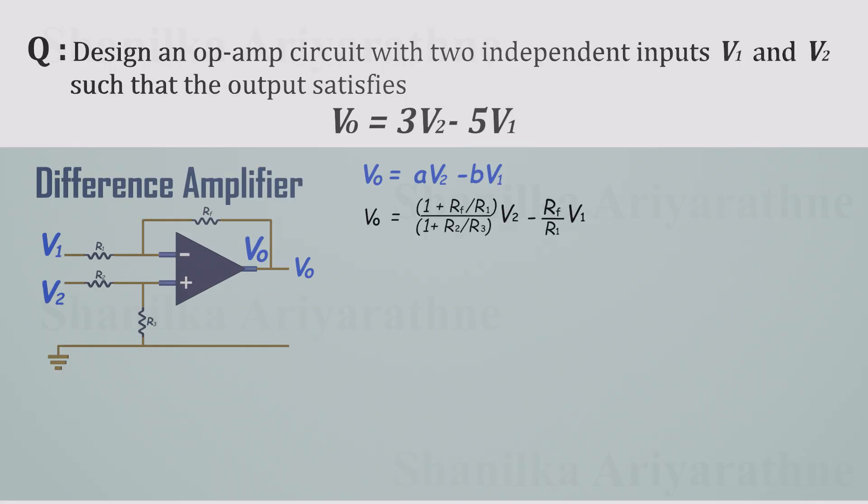Now, let's solve our specific target. V out equals 3 times V2 minus 5 times V1. We already know the difference amplifier form, so all that's left is choosing resistor values to match those two weights. Step 1, match the V2 coefficient. This is our sixth equation. Step 2, match the V1 coefficient. This is our seventh equation.